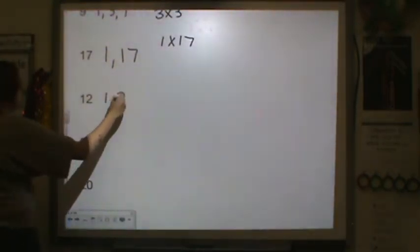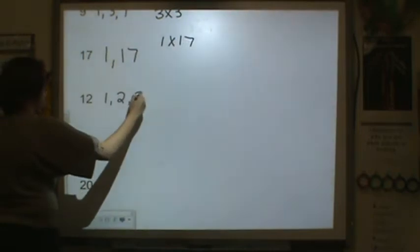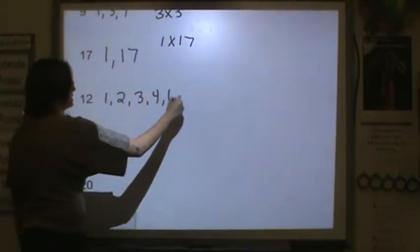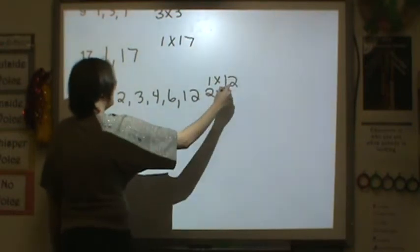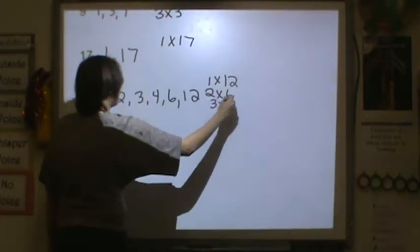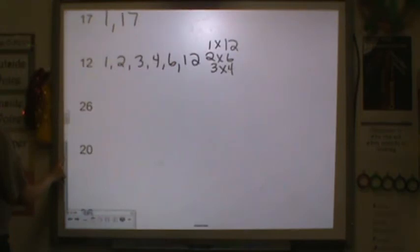12. 1, 2, 3, 4, 6, and 12. 1 times 12, 2 times 6, and 3 times 4 will get me to a product of 12.